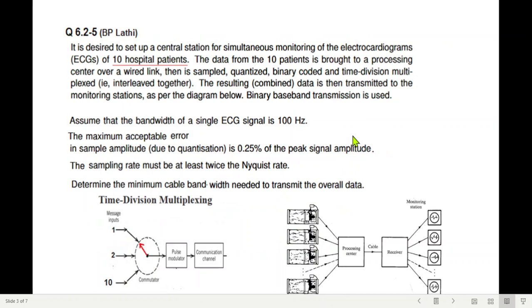Let's see this question. It is desired to set up a central station for simultaneous monitoring of the electrocardiogram data from ECG of 10 hospitals. The data from 10 patients is brought to the processing center over a wired link. Then it is sampled, quantized, binary coded, and time division multiplexed. Time division multiplexing, I'm repeating here, means that these are the 10 signals and one at a time are selected.